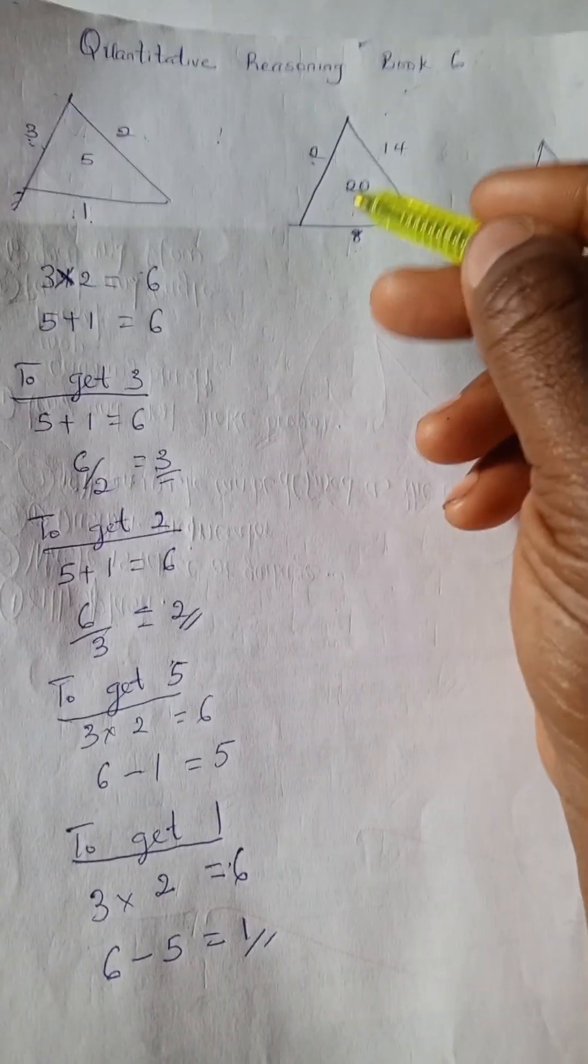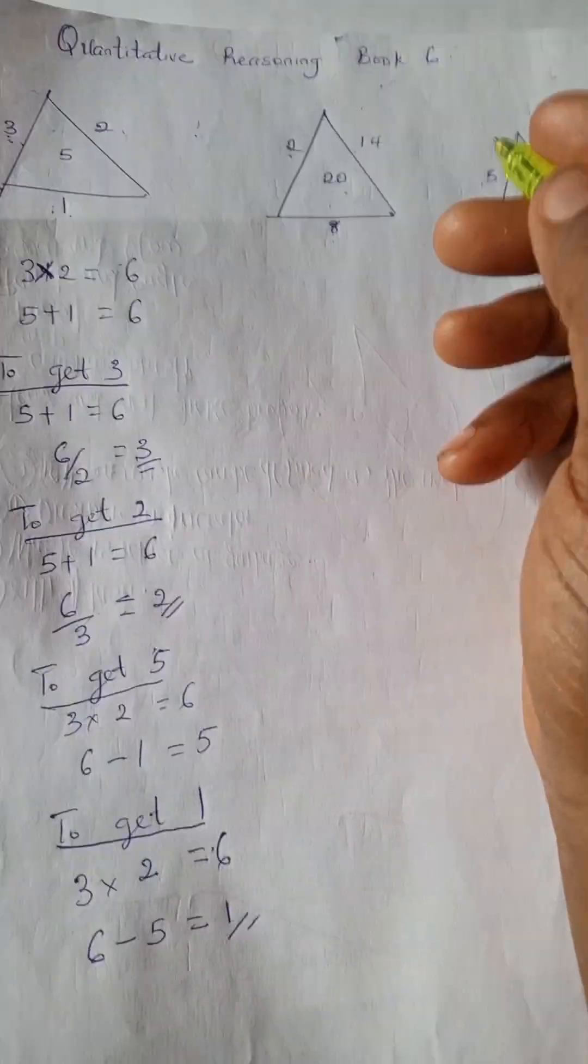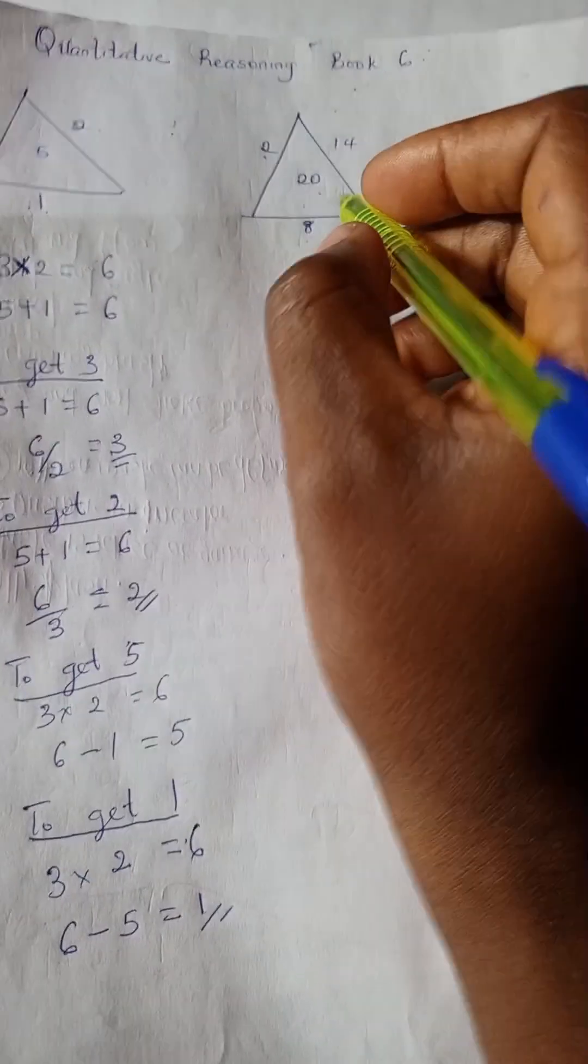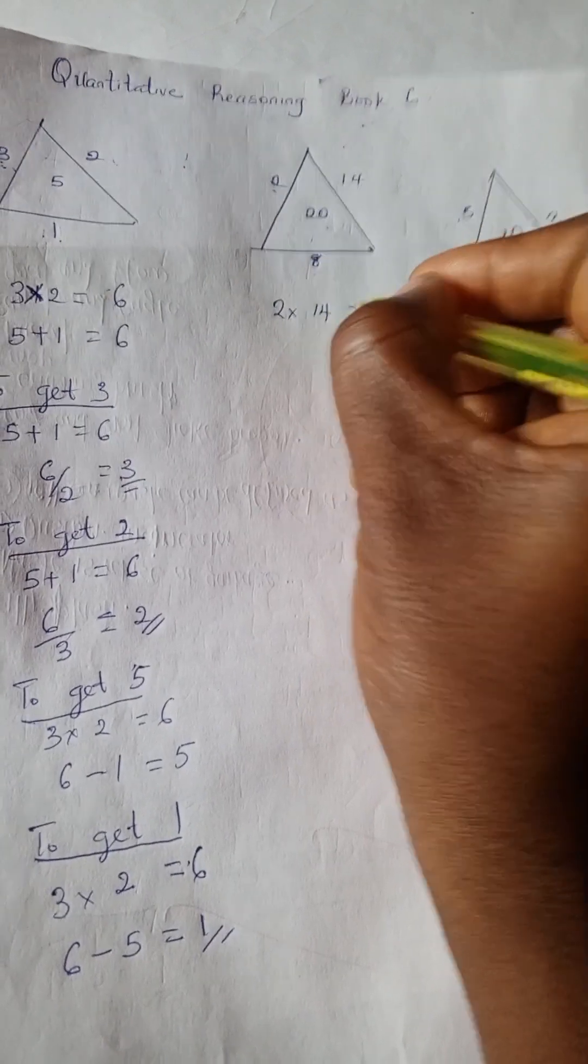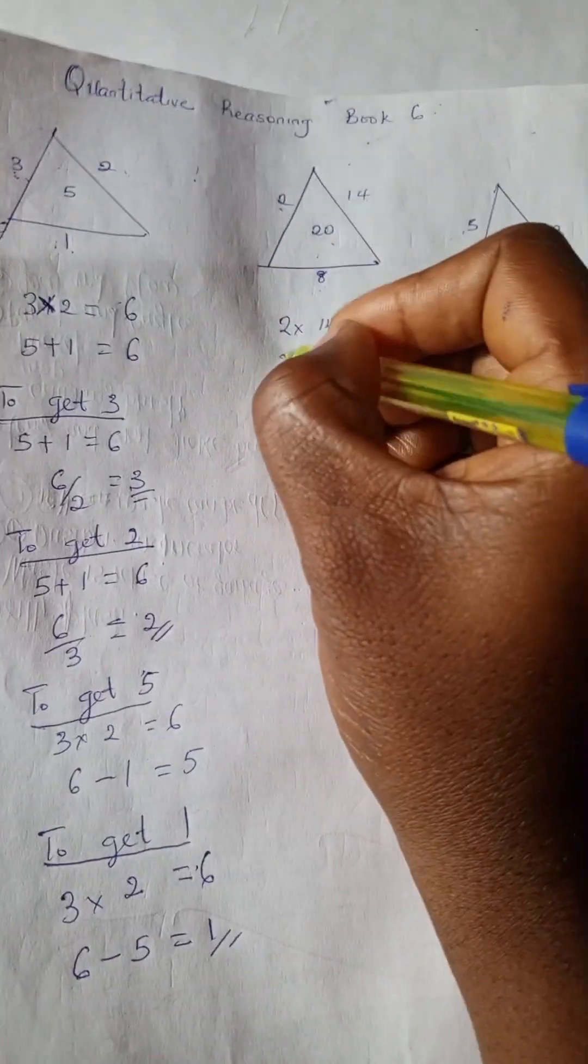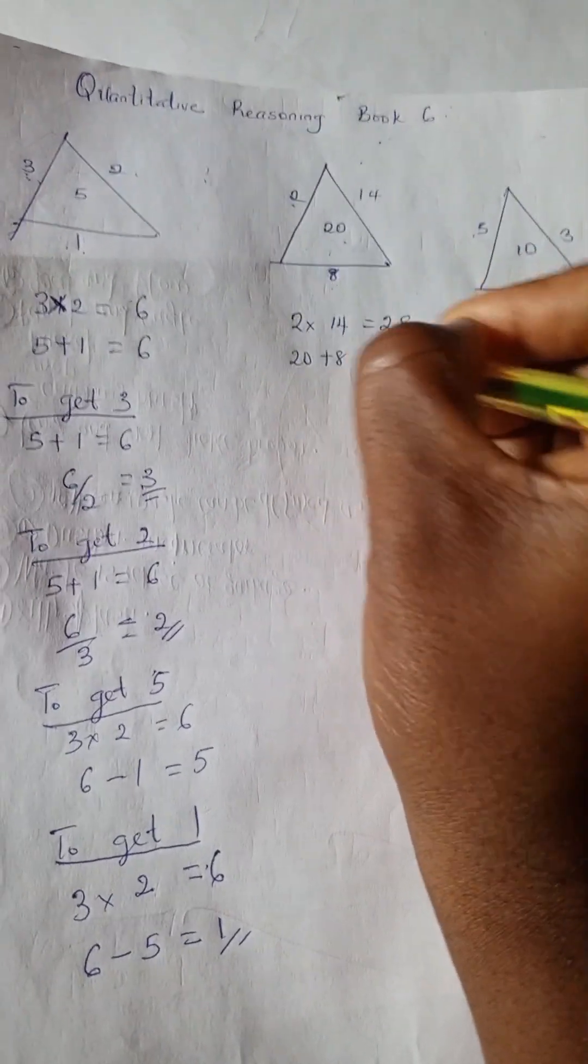All right, so let's go. We have 2 times 14 is 28, and 20 plus 8 is 28. Let's try to get each number.